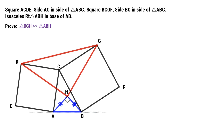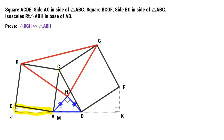Let's extend AB through point E. Make a perpendicular segment EJ to AB. Through point F, make a perpendicular segment FK to AB. Through point C, make a perpendicular segment CM to AB. Let's focus on right triangle EJA and right triangle AMC.